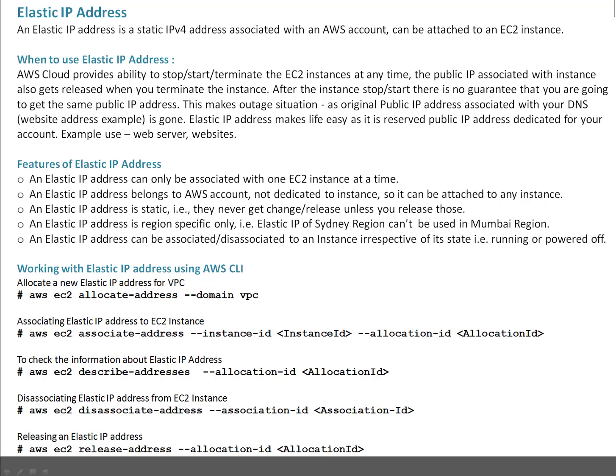Amazon Cloud provides the ability to stop, start, or terminate the EC2 instance at any time. The public IP associated with the instance also gets released when you terminate the instance. Or when you do a stop/start of the instance, there is no guarantee that you will get the same IP address once the instance is up. This creates an outage-like situation, as the original public IP address, which may be associated with your website or the DNS the website is using, is gone. In such cases, elastic IP address is the solution.